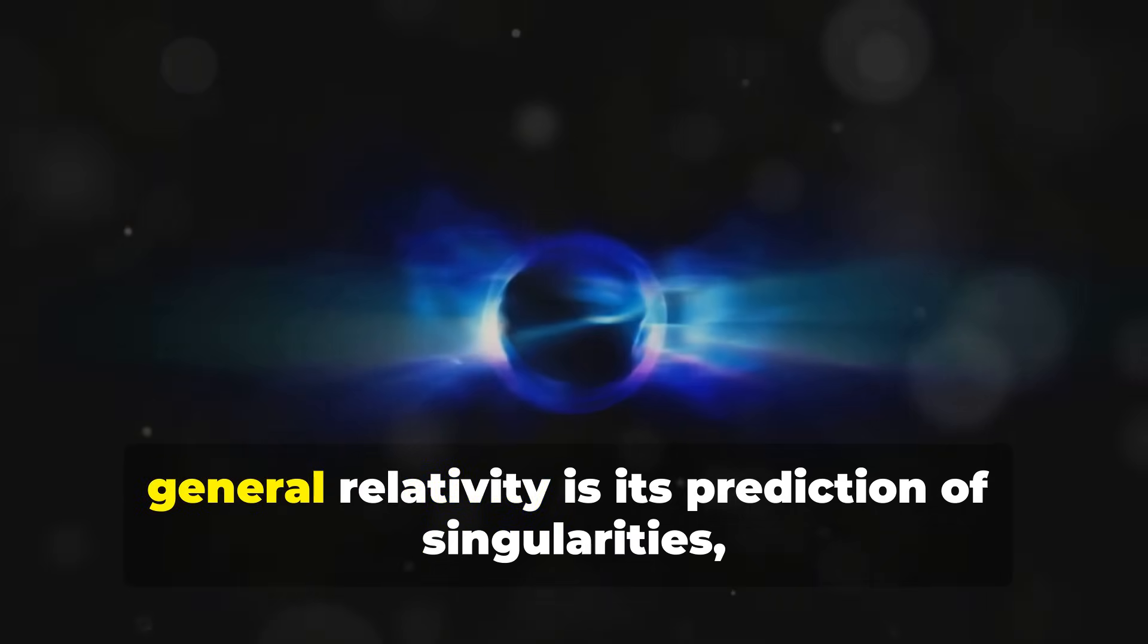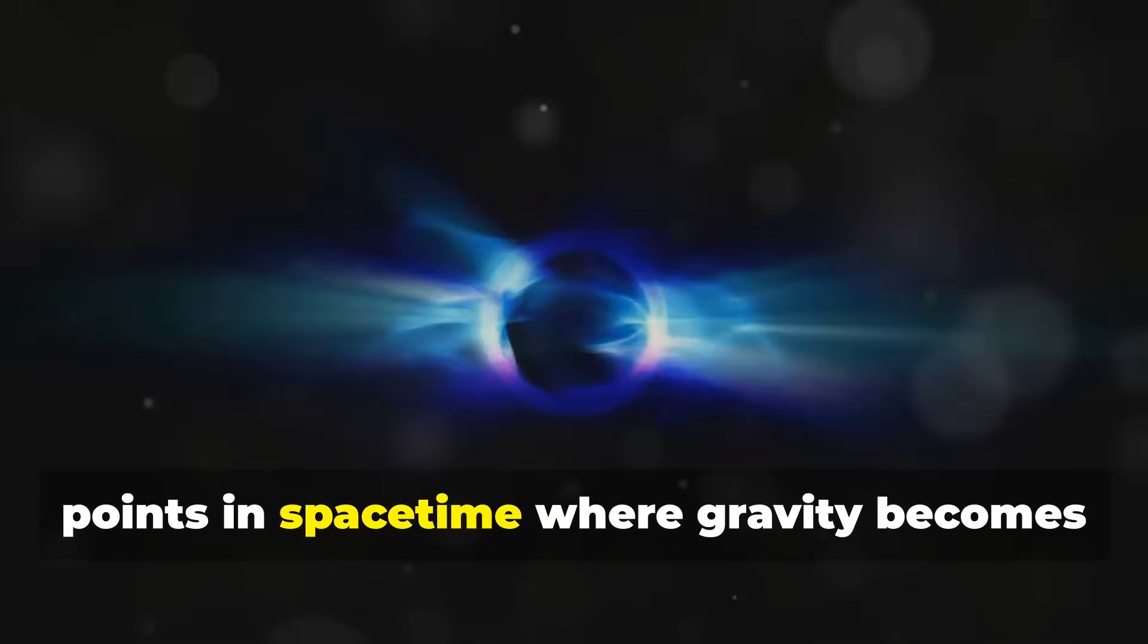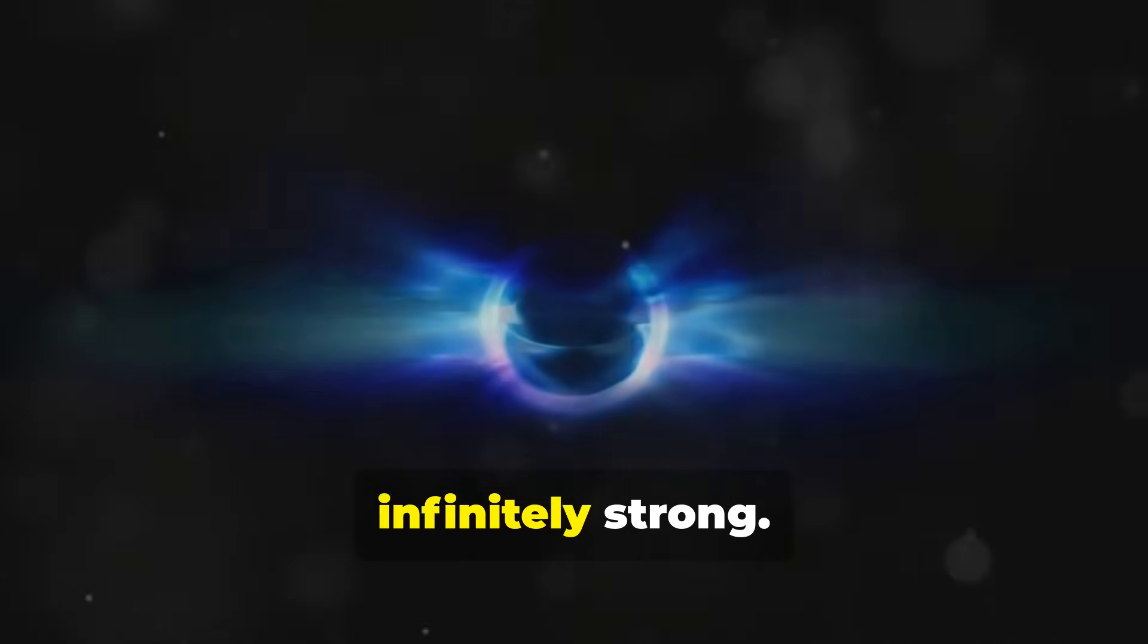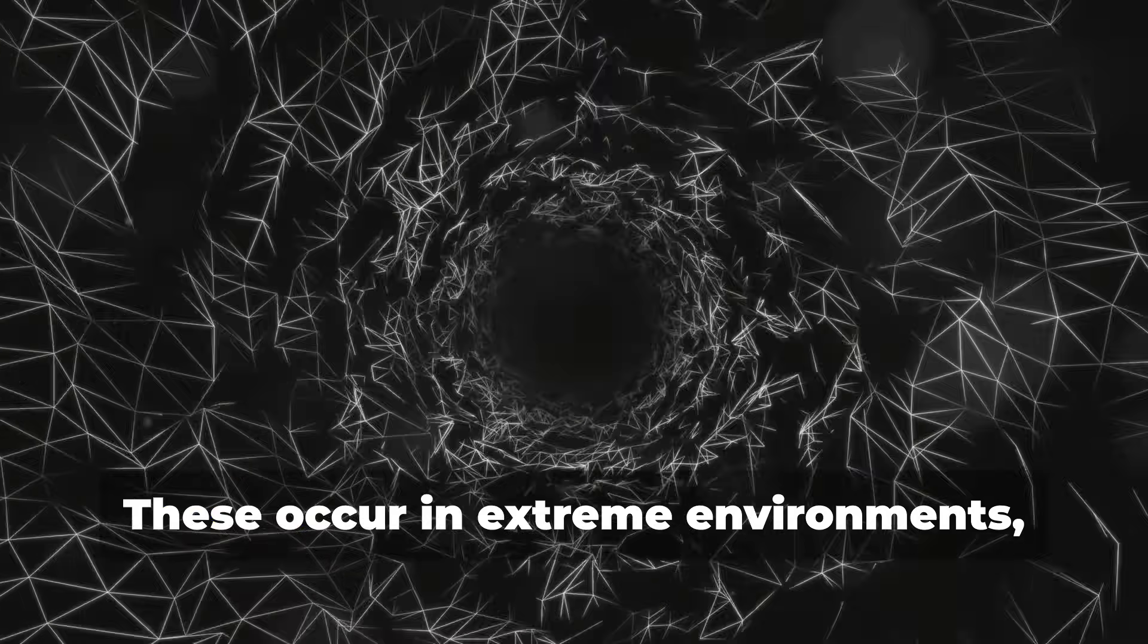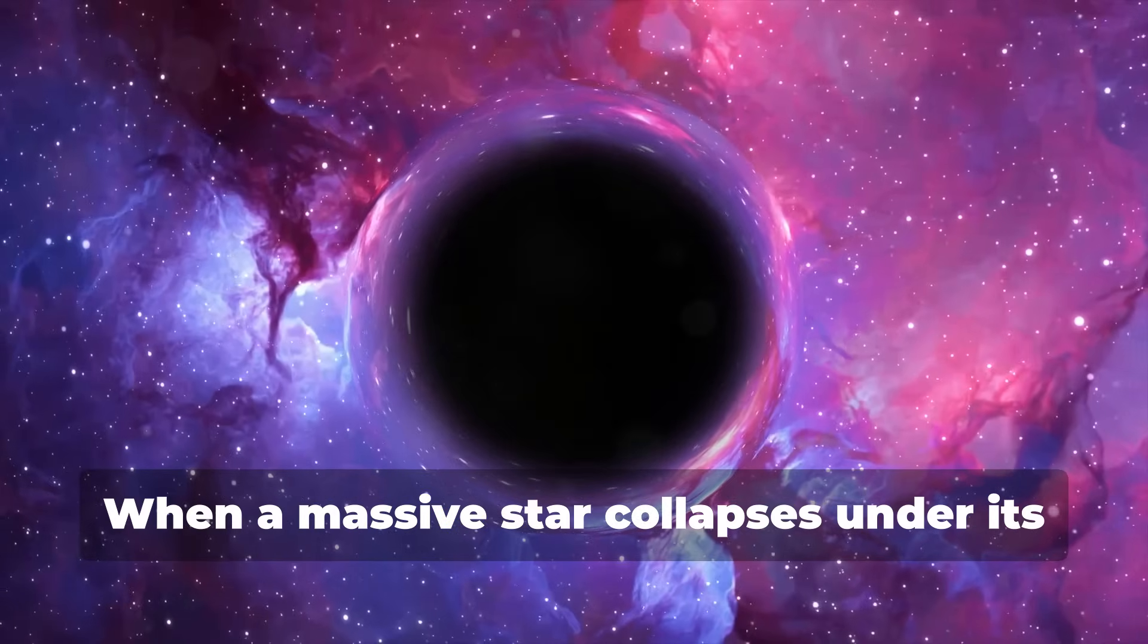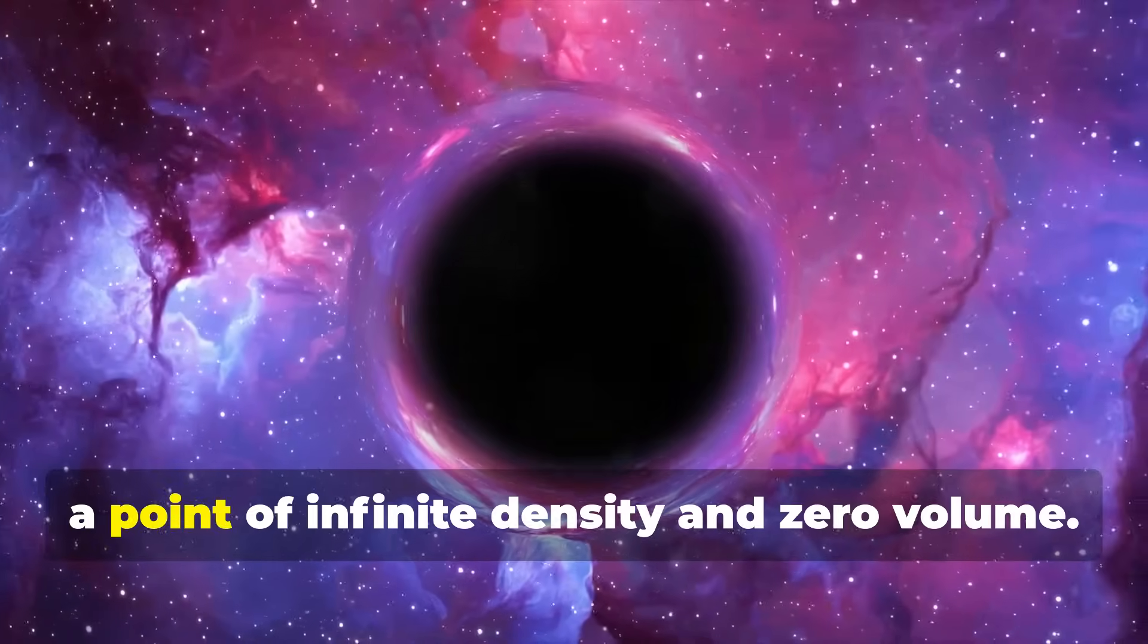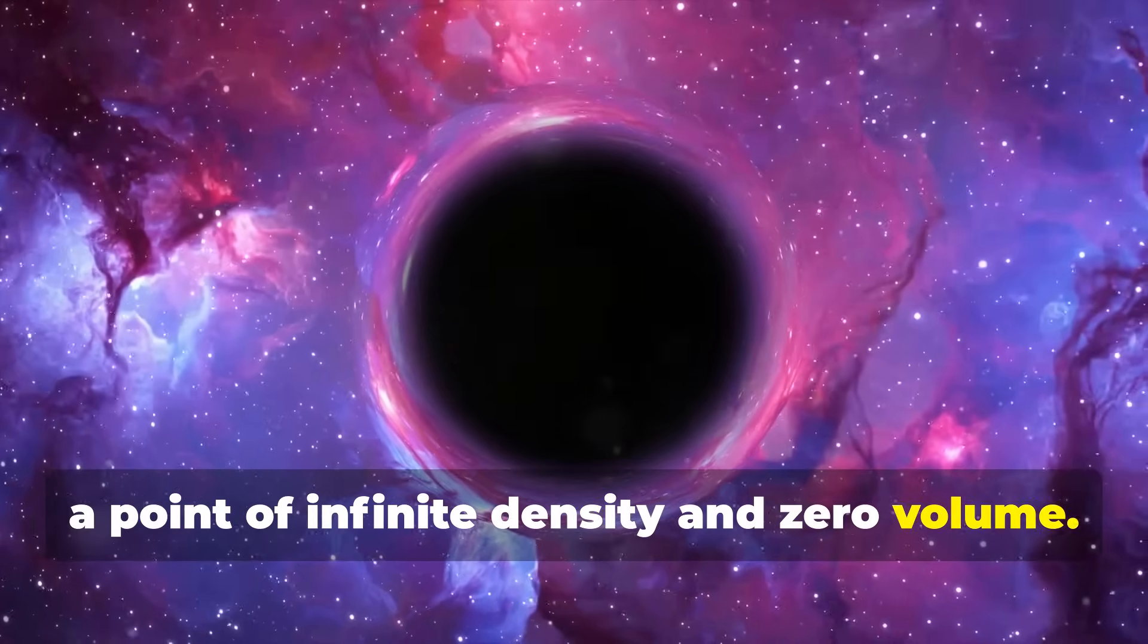One of the most striking failures of general relativity is its prediction of singularities, points in space-time where gravity becomes infinitely strong. These occur in extreme environments like the center of black holes. When a massive star collapses under its own gravity, it forms a black hole containing a singularity, a point of infinite density and zero volume.